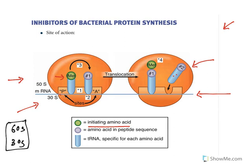In ribosomes you have two sites: P site and A site — peptidyl site and acceptor site. The incoming initiating amino acid will be at the P site, and to this A site a new tRNA comes with a new amino acid. This amino acid comes according to the codon present on the mRNA, and the initiating amino acid gets transferred to it. This is known as the transpeptidation step.